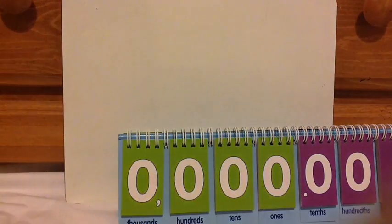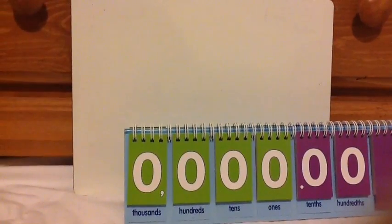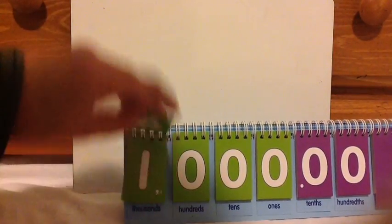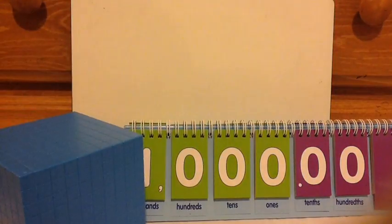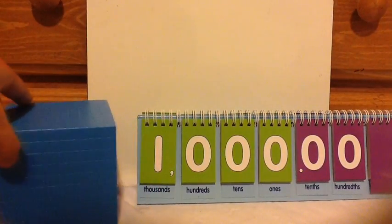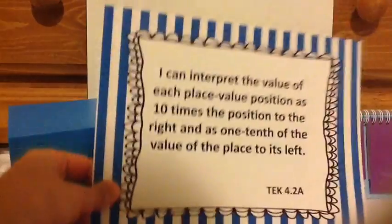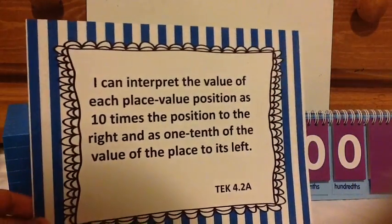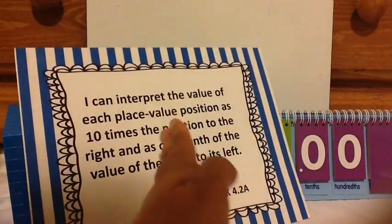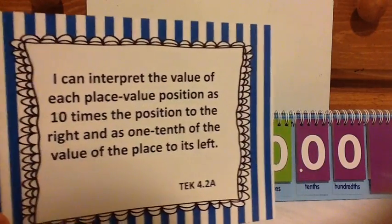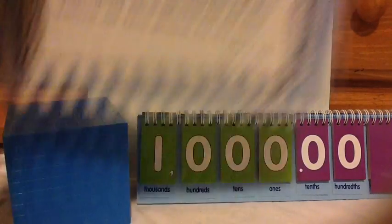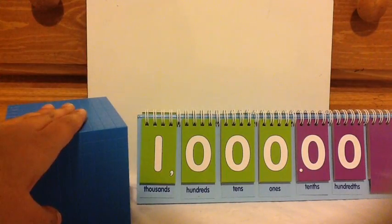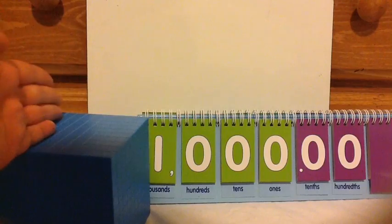So now let's go backwards. Suppose I had a 1,000s block — 1 of a 1,000s block. So we've accomplished 10 times the position to the right. Now we have one-tenth of the value of the position to its left. So whatever this position is, it's one-tenth of what's on the left of it.